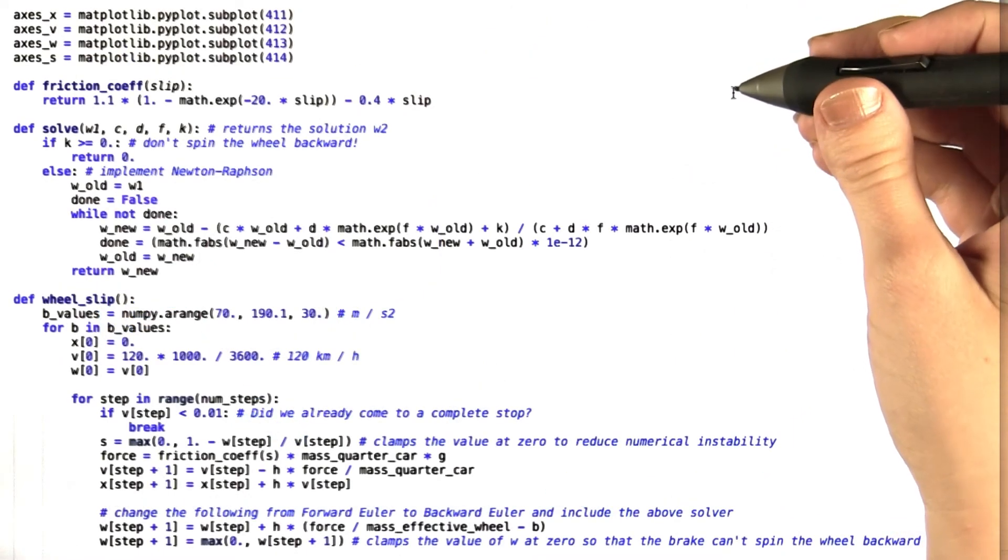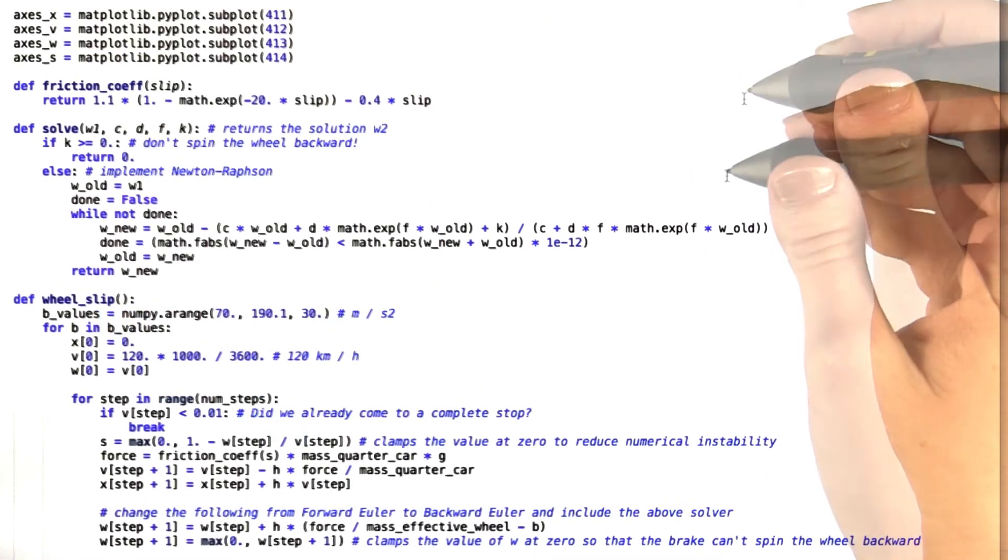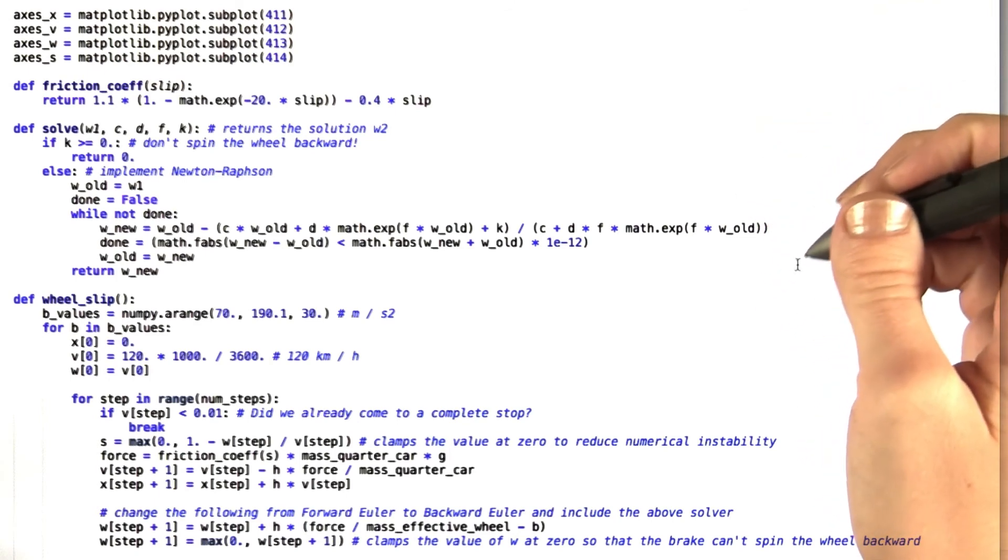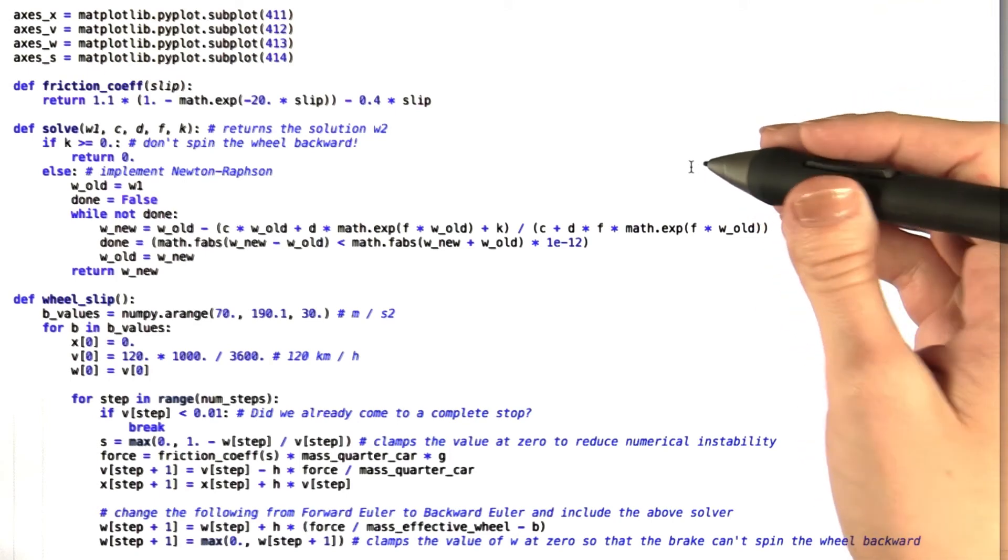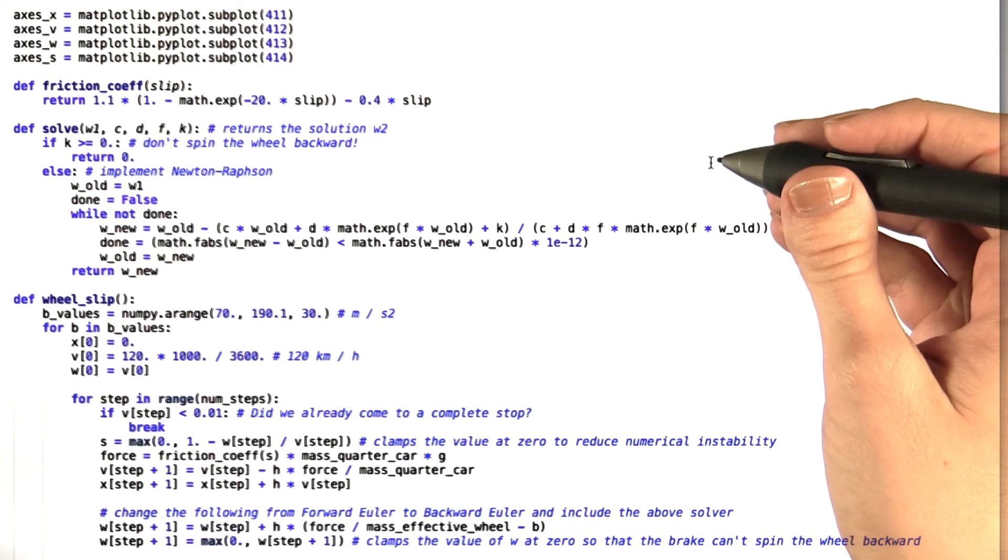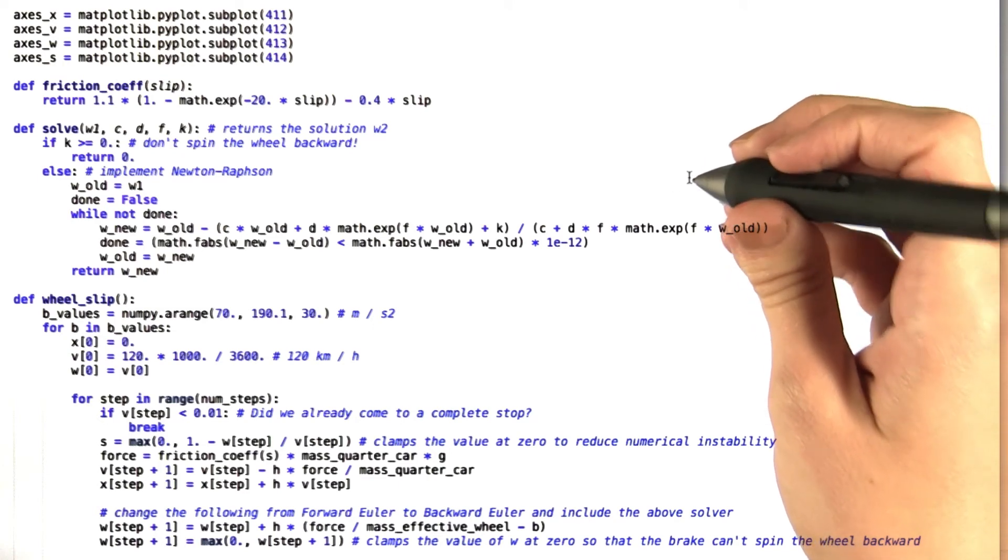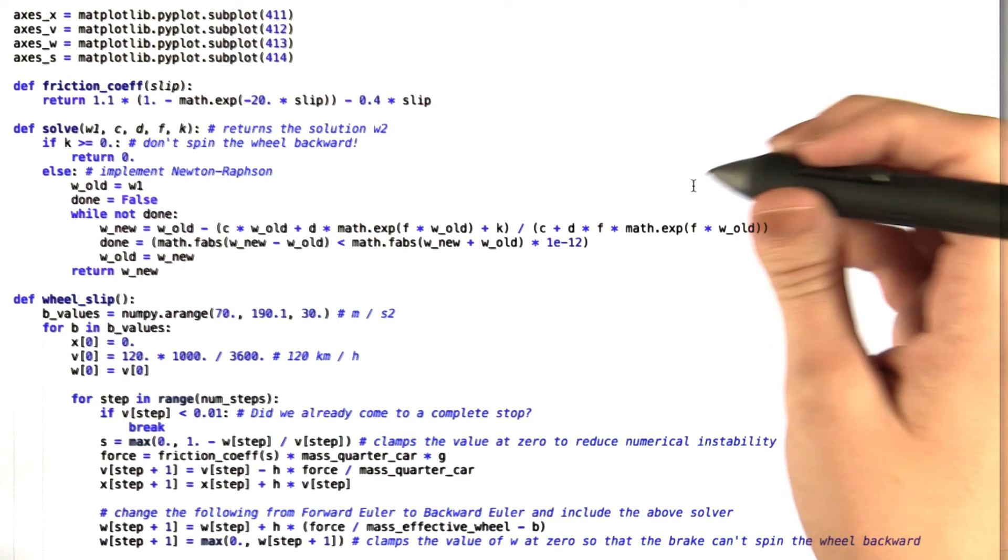Looking at the code, you can see that we've given you a substantial portion of the program already. In fact, we've handed you this solver right here. Since we're asking you to use the backward Euler method, which is an implicit method, you're going to end up with an equation that is not linear and therefore you can't solve explicitly.